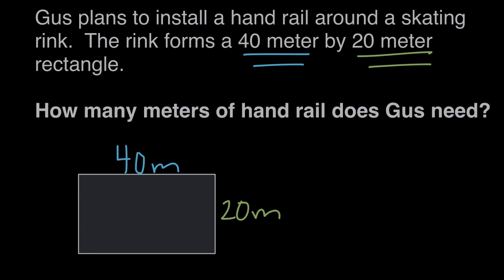Because this skating rink is a rectangle, we know that opposite sides are equal, so if this length is 40 meters up here, then this length down here must also be 40 meters. And we can do the same thing with 20. If we have 20 over here, then the length across must also be 20 meters.